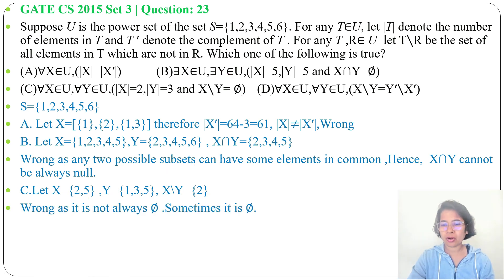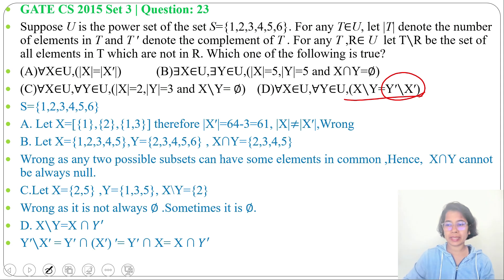Next option D: for all X belongs to U, for all Y belongs to U, X\Y equals Y'\X'. So, let me simplify it. X\Y that we can write as X∩Y'. Now, Y'\X' that we can write as Y'∩(X')'.